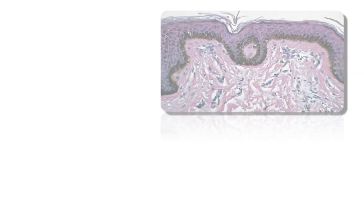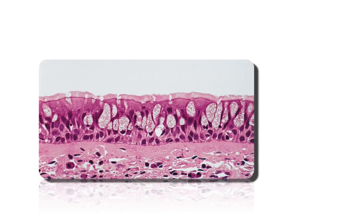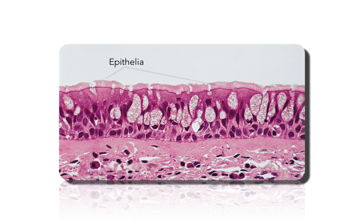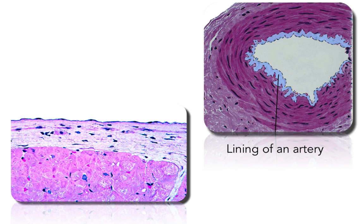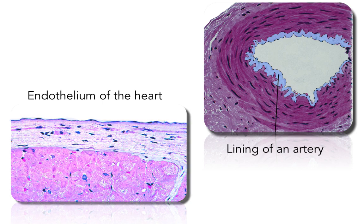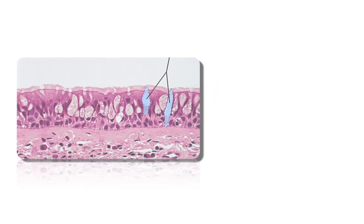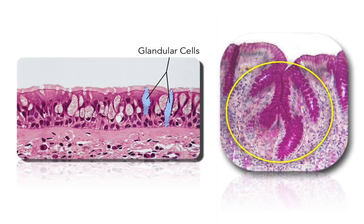We all engage with epithelial tissue every day because the outer layers of our skin are made of epithelial tissue. Epithelial tissue includes epithelia and glands. Epithelia are layers of cells that cover not only external surfaces as in our skin, but also internal surfaces of hollow organs — for example, the inner lining of the chambers of our heart or lungs. Glands, on the other hand, are composed of fluid-secreting cells derived from epithelia during development.